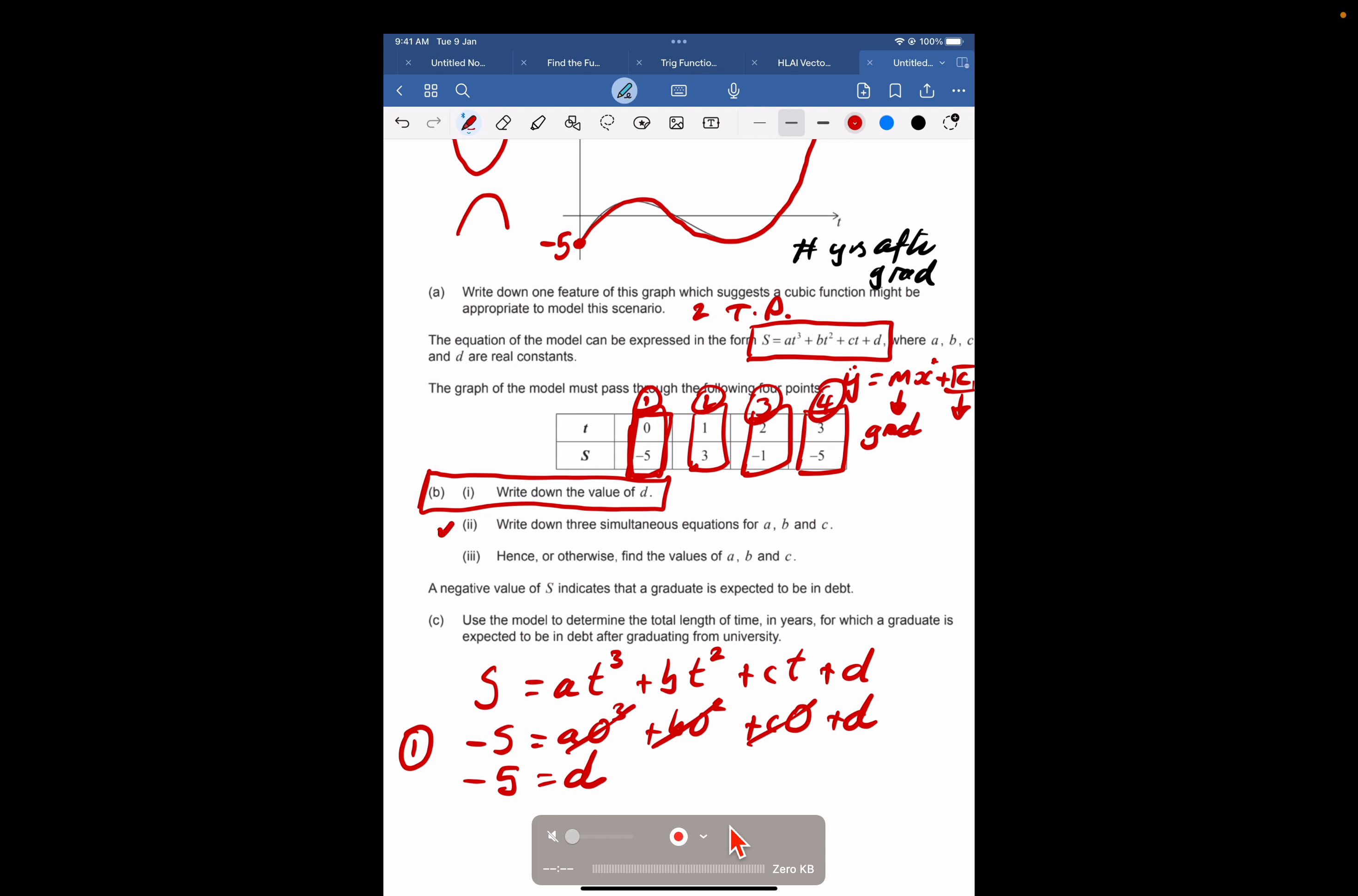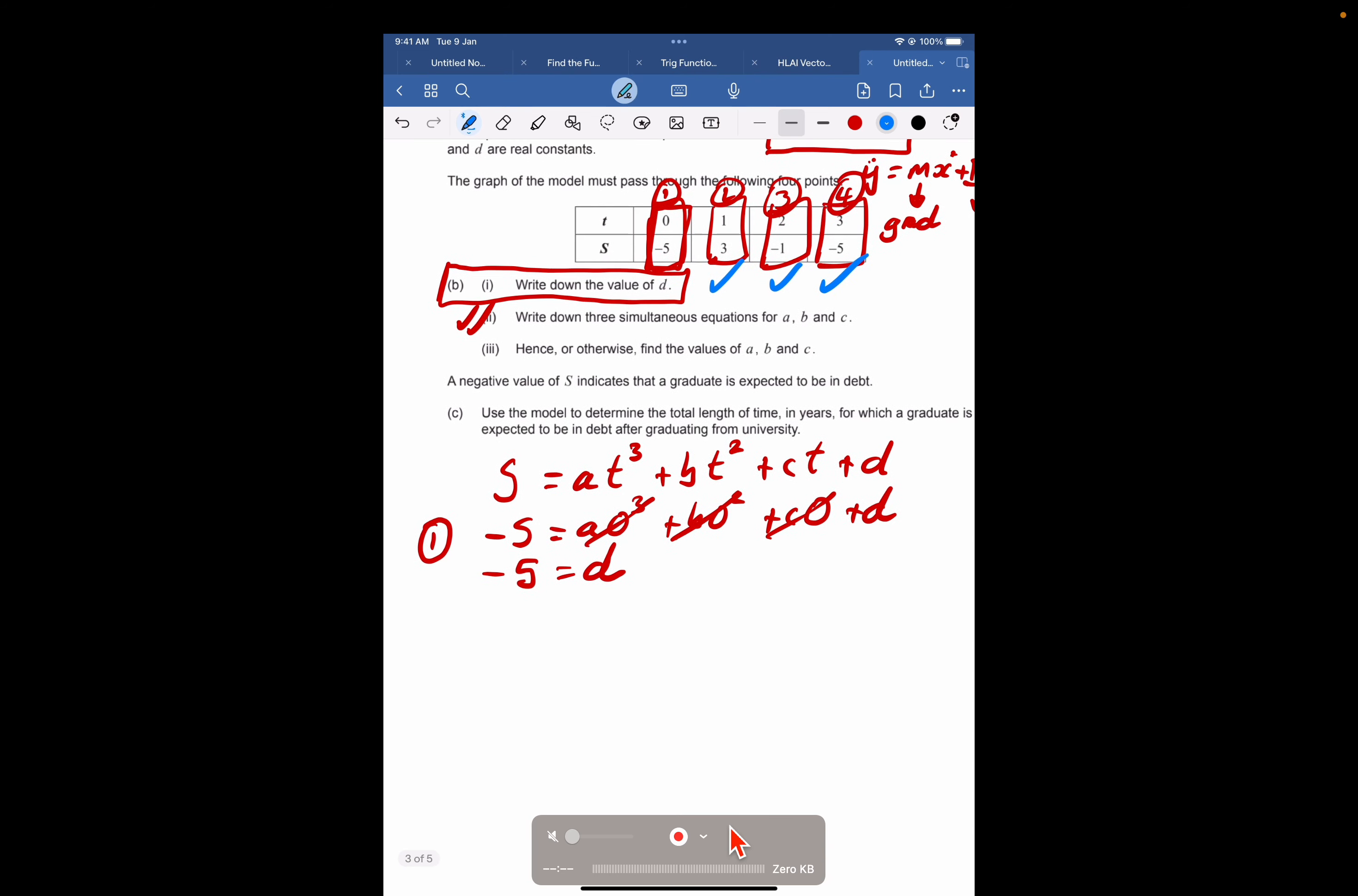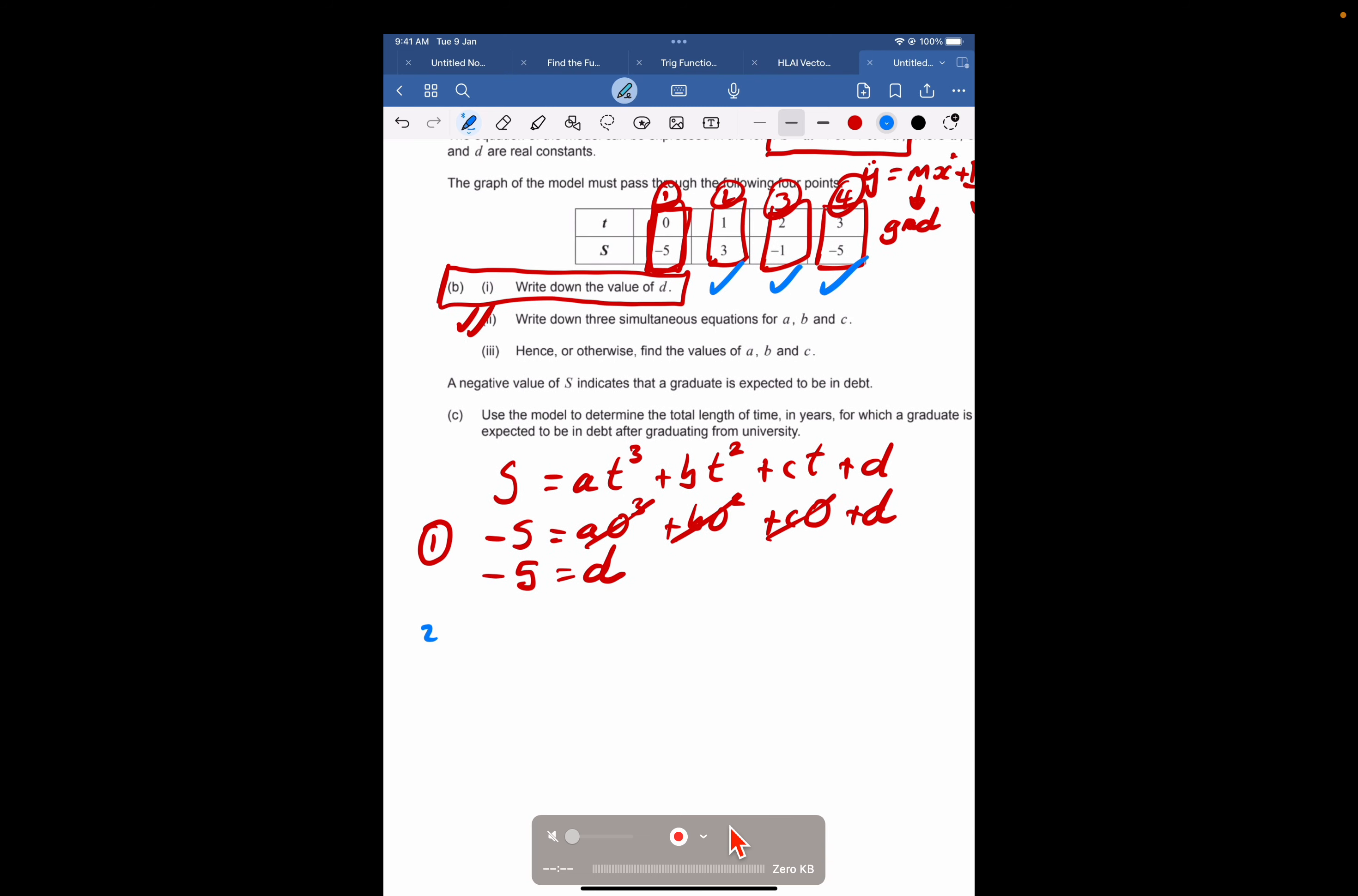Part 2. Write down three simultaneous equations for A, B, and C. So hopefully you can see where we're going with this. We've got one pair of values, 2, 3. So we just go ahead and substitute these in. Let's create equation 2 here, equation 3 here, and equation 4 here. Those are our three blue equations.